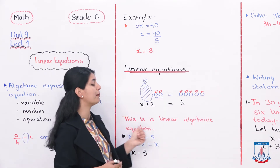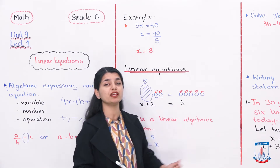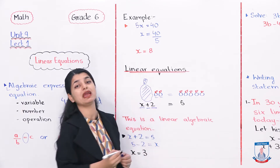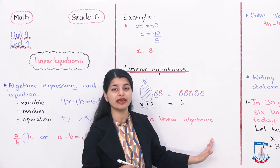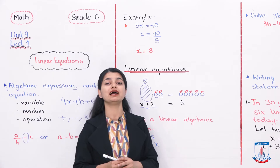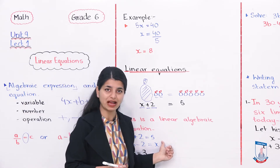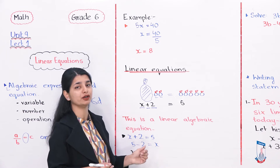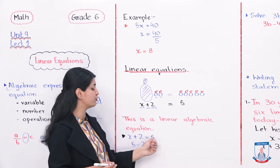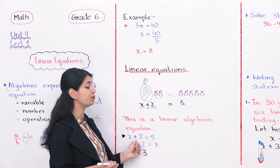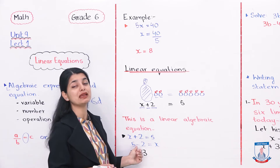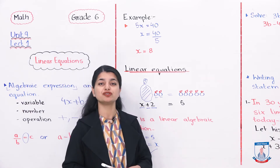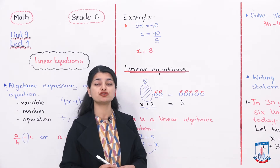x plus 2 equals 5 is our linear algebraic equation. Why algebraic? Because there is a variable x, an ordinary number 2, and an operation plus. We can also call this a simple equation. To solve it, you can subtract 2 from both sides — 2 minus 2 is 0, so x equals 5 minus 2, which is 3. Or simply move plus 2 to the other side as minus 2, and 5 minus 2 gives 3. Equation solved.